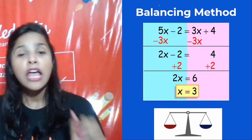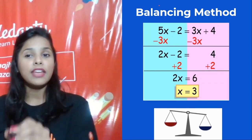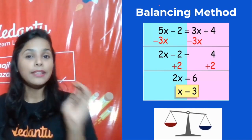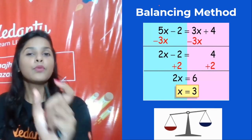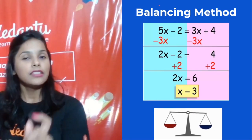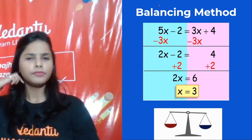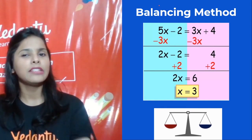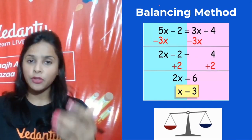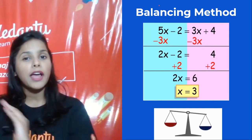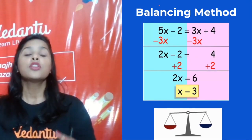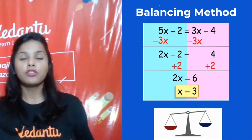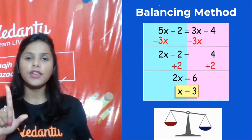So in the balancing method, can you see this: 5x − 2 = 3x + 4. We are going to eliminate the extra terms. First, we eliminate 3x from the right-hand side by subtracting 3x from both sides, so 3x − 3x = 0.